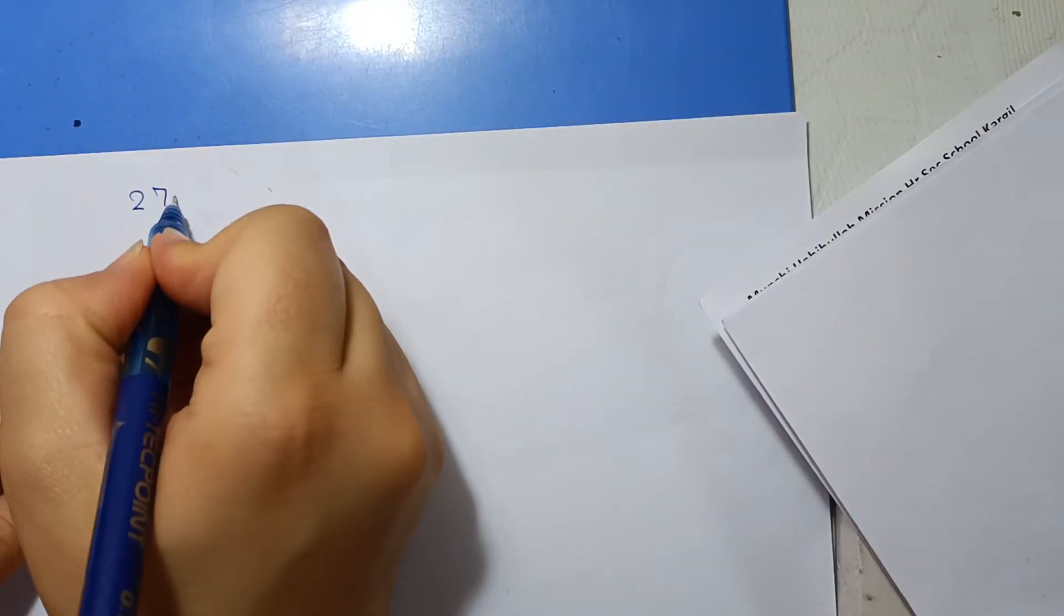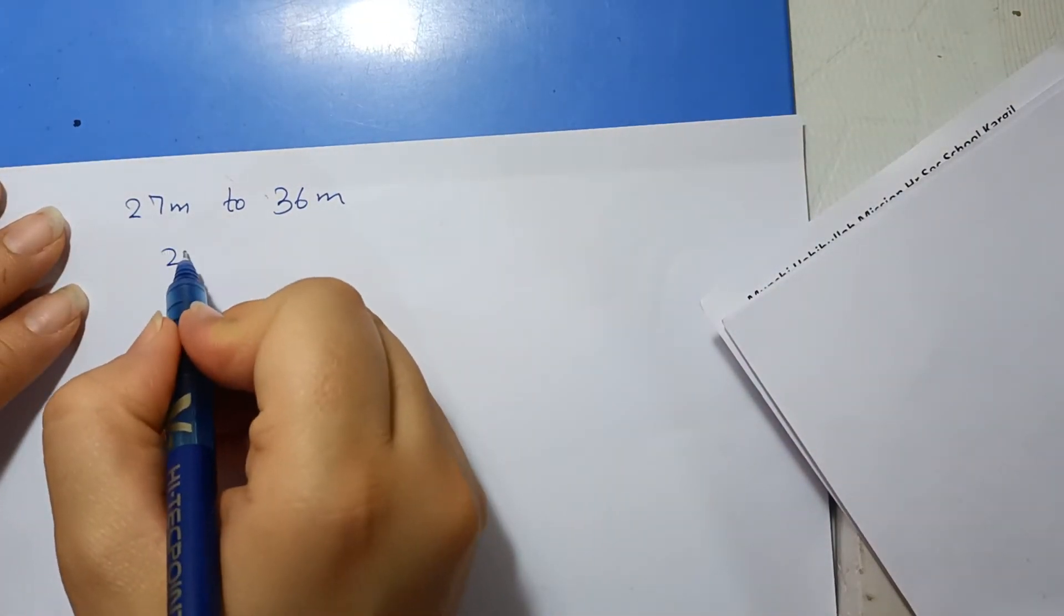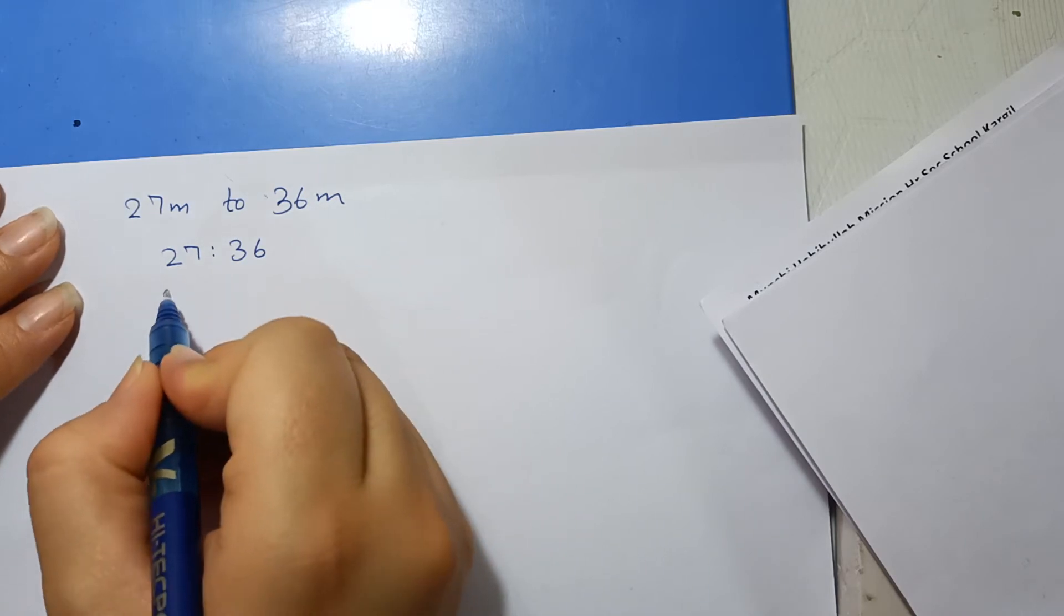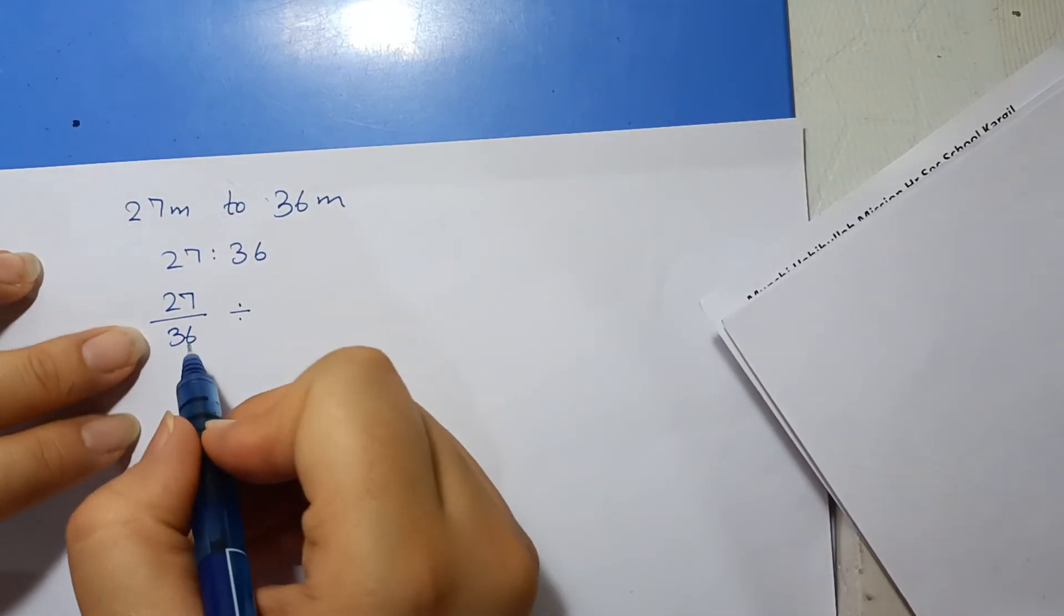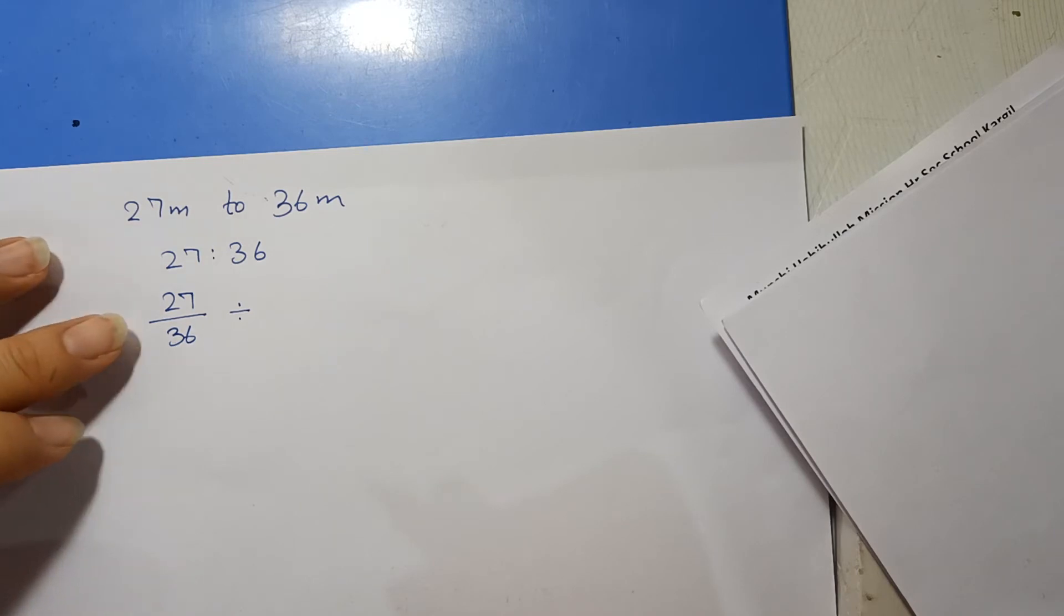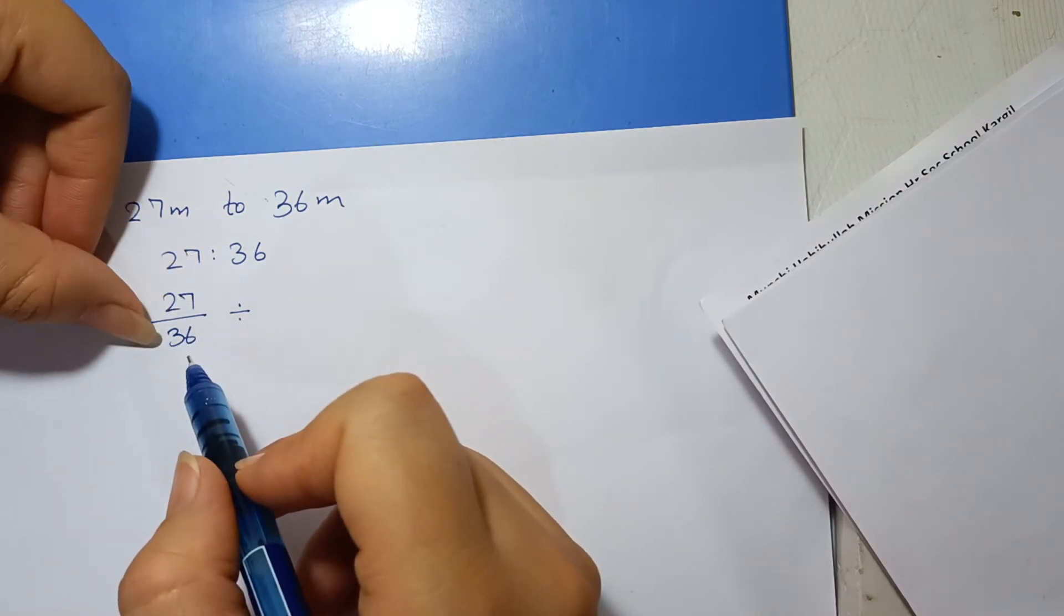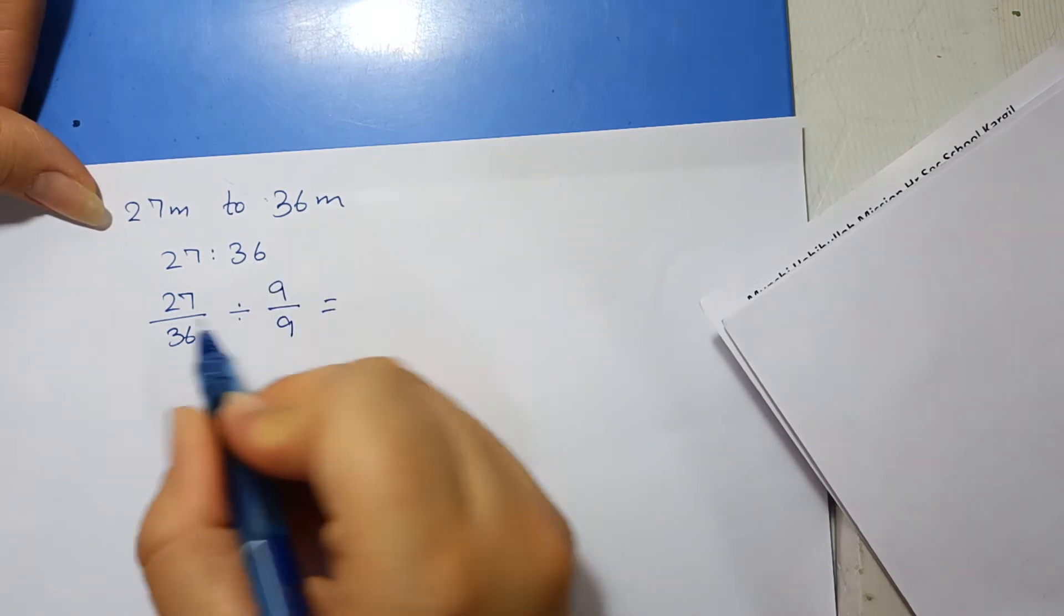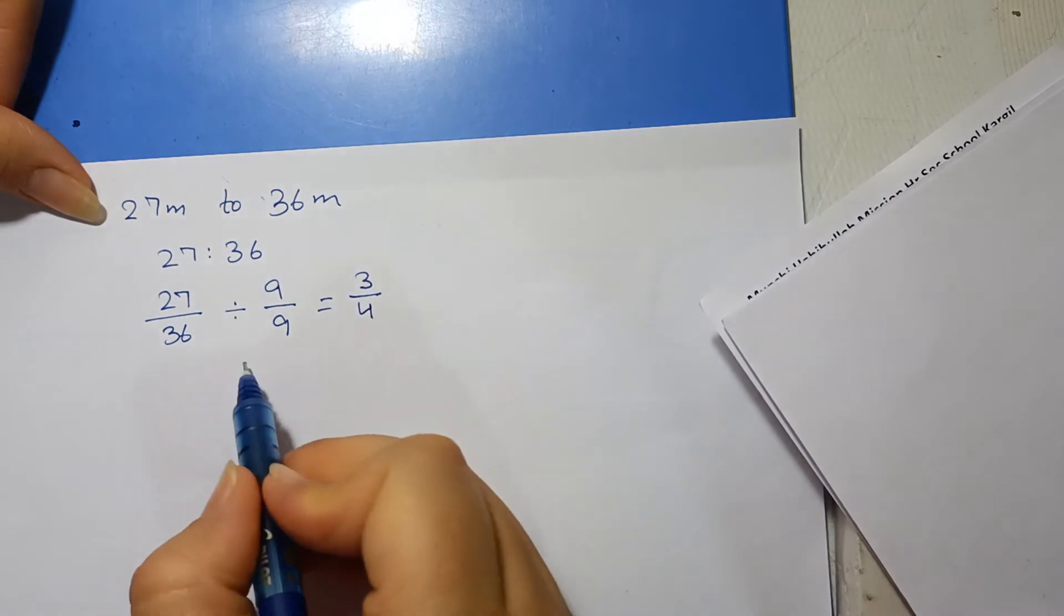Find the ratios of the following. You have to give some unit problems like 27 meters to 36 meters. This means 27 is to 36. This is like 27 upon 36 divided by 9. Between 27 and 36, if you see 9 times 3 is 27 and 9 times 4 is 36. So 27 divided by 9 is 3 and 36 divided by 9 is 4.